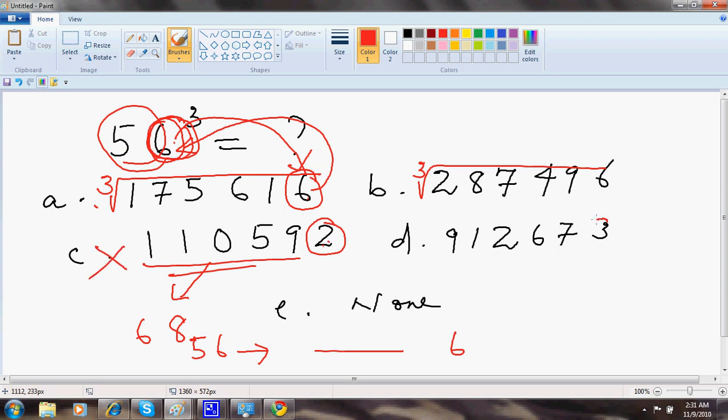Similarly, if this is 3, this will be the cube of a number which is having 7. It may be 67 or 97 or something, but this can't be 6. So this is also ruled out. So I am left with another 2 options. That is 175,616, 287,496.